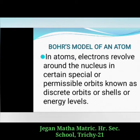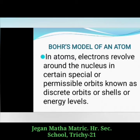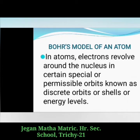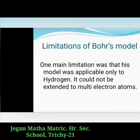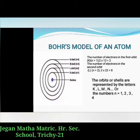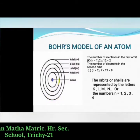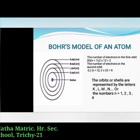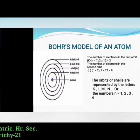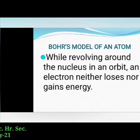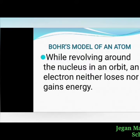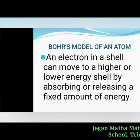In atoms, the electron revolves around the nucleus in stationary circular paths called orbits, or shells, or energy levels. This is the nucleus — the electron revolves around the nucleus in these stationary circular paths. While revolving around the nucleus in an orbit, an electron neither loses nor gains energy.